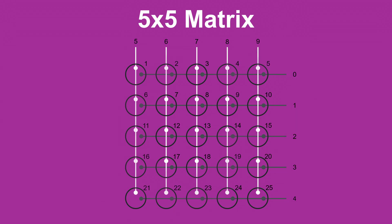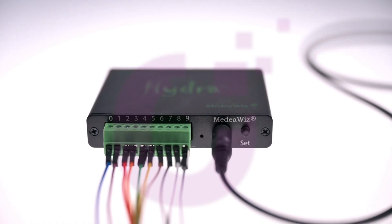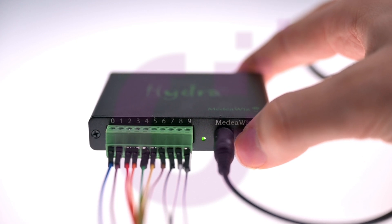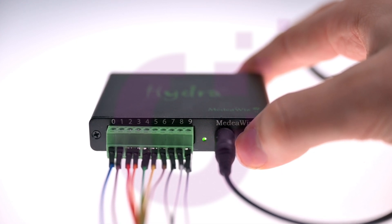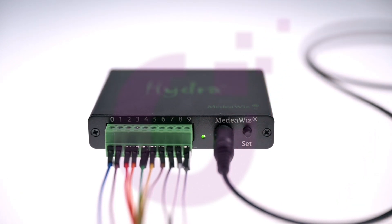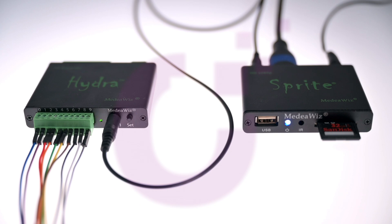For the 25 buttons, we switch the Hydra to mode 51 and connect the buttons as a matrix. We disconnect the power of the Sprite, press the set button, and reconnect the power. We insert the first digit of our mode number — in this case 5. We press the button 5 times and wait until the LED lights up yellow. Now we press 1 time. After a short wait the Hydra repeats our number: once the 5 and once the 1. The LED is now permanently green. You can now start the files with the 25 buttons.